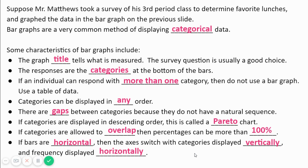Categories may be displayed in any order. They could be done alphabetically. They could be done geographically. They could be done any way you like. If they go from biggest to smallest, that's a Pareto chart.